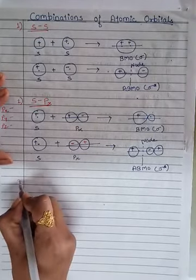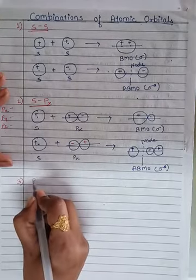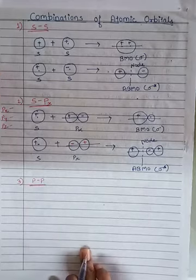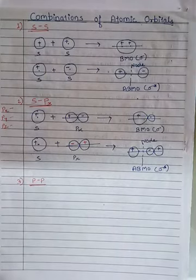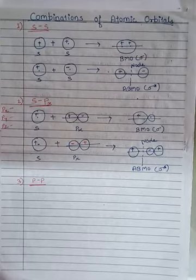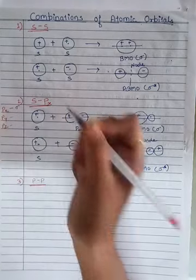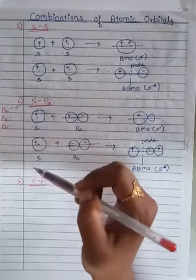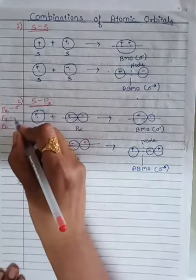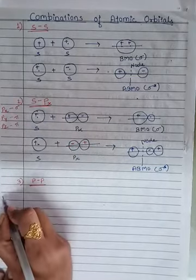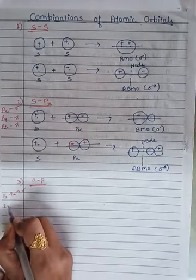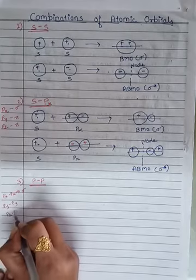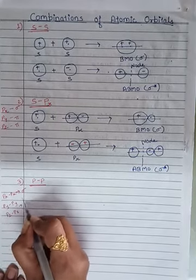The third type of combination is the P-P combination — one P orbital combining with another P orbital. There are three types: PX, PY, and PZ. For PX, the lobes are along the axis, so it results in the formation of a sigma bond. For PY and PZ, the lobes are perpendicular to the axis, resulting in a pi bond. When PX overlaps with PX, it forms sigma MOs, whereas PY-PY or PZ-PZ combinations form pi MOs.